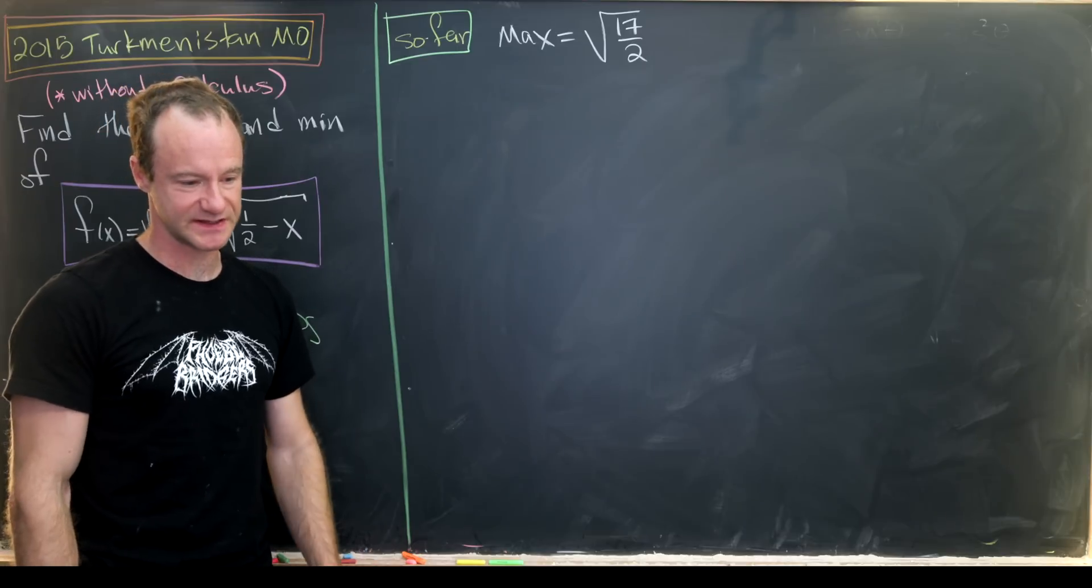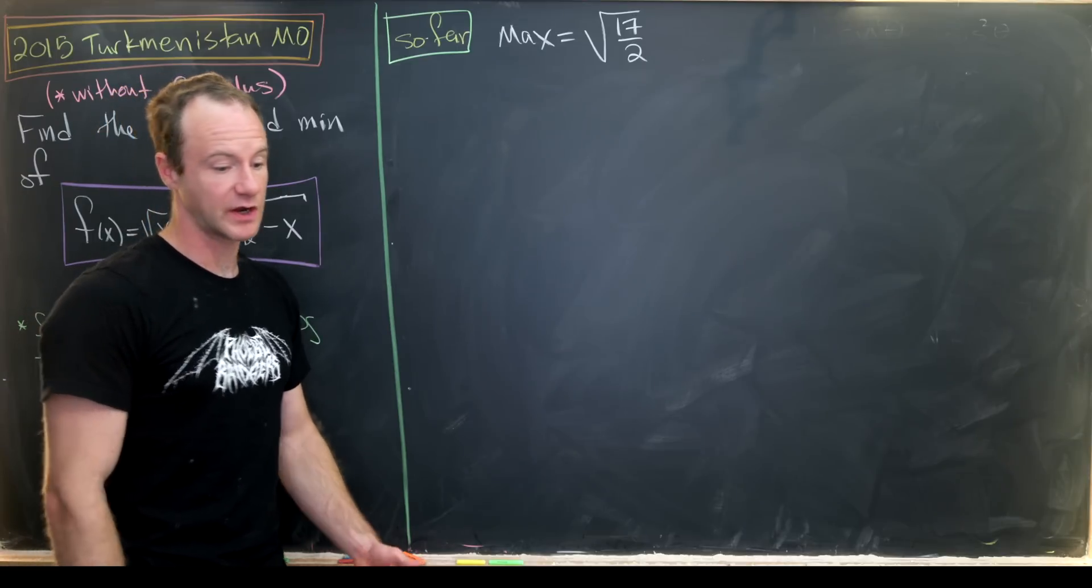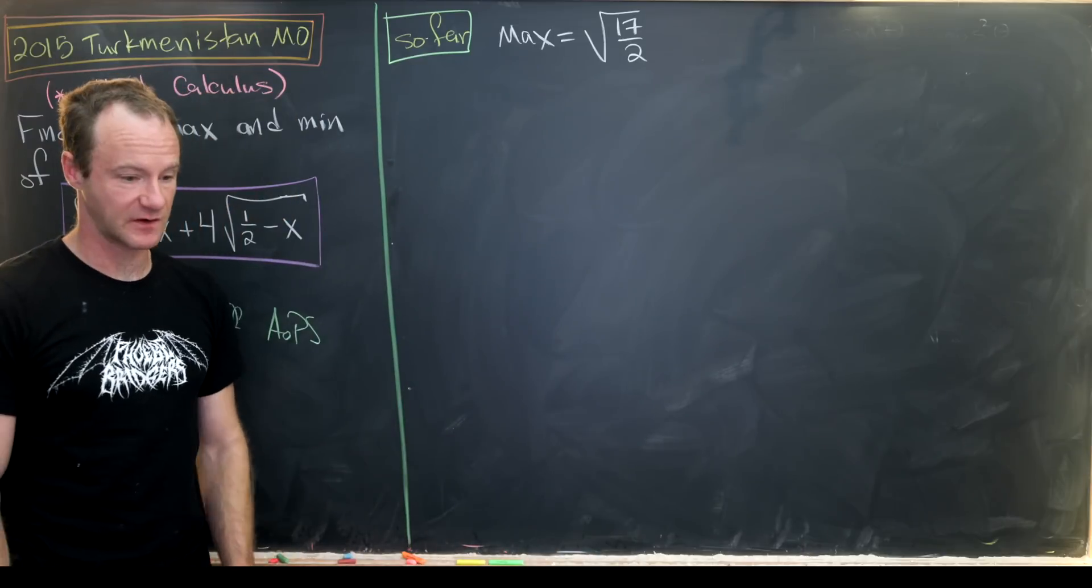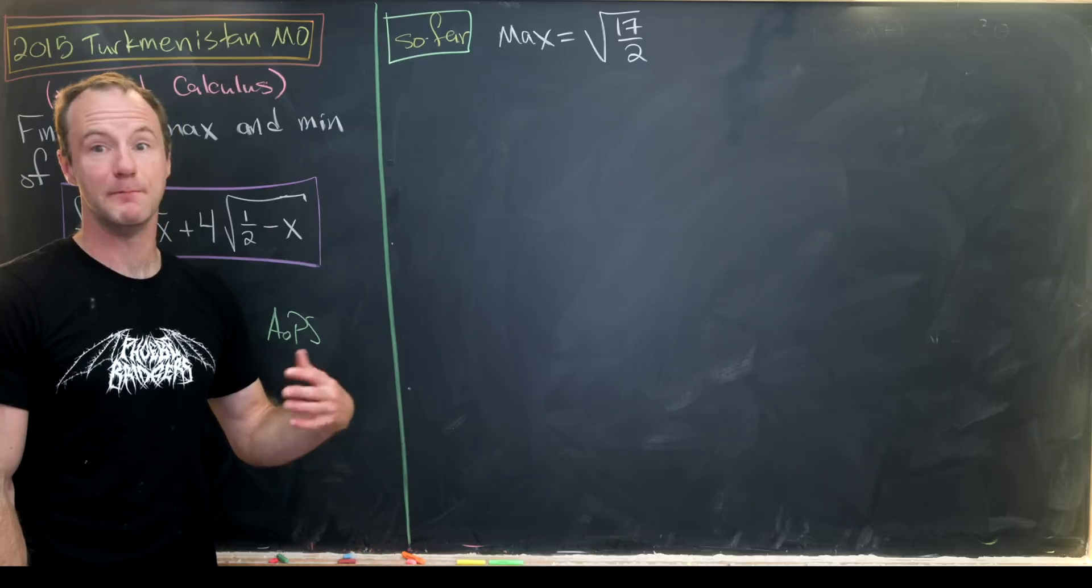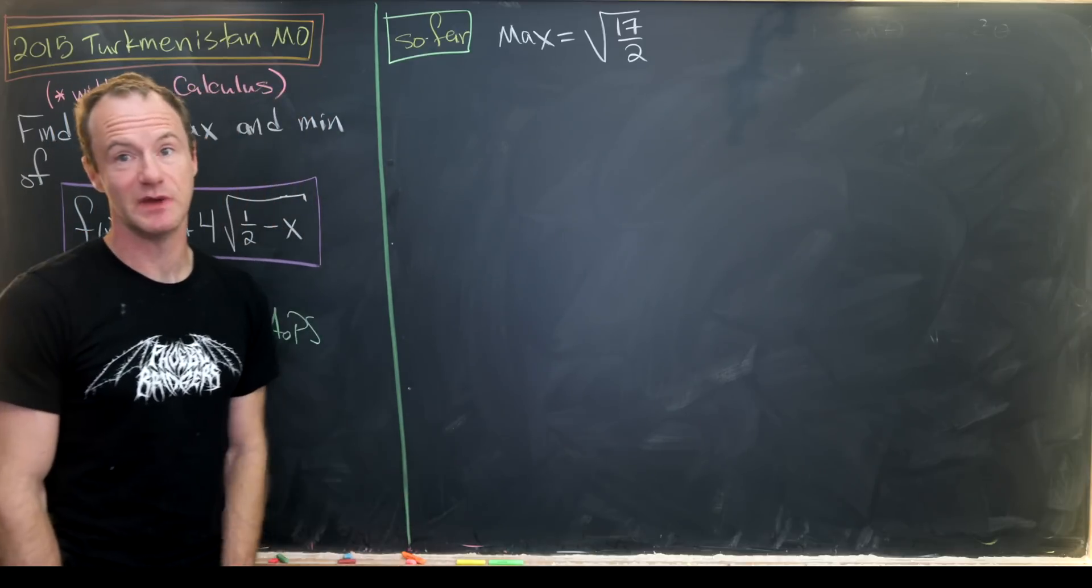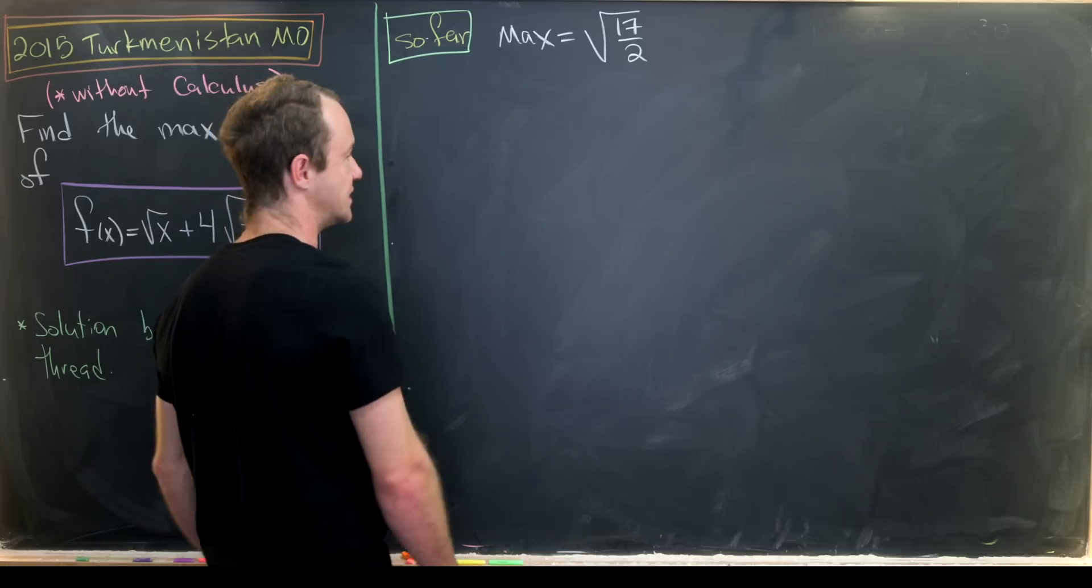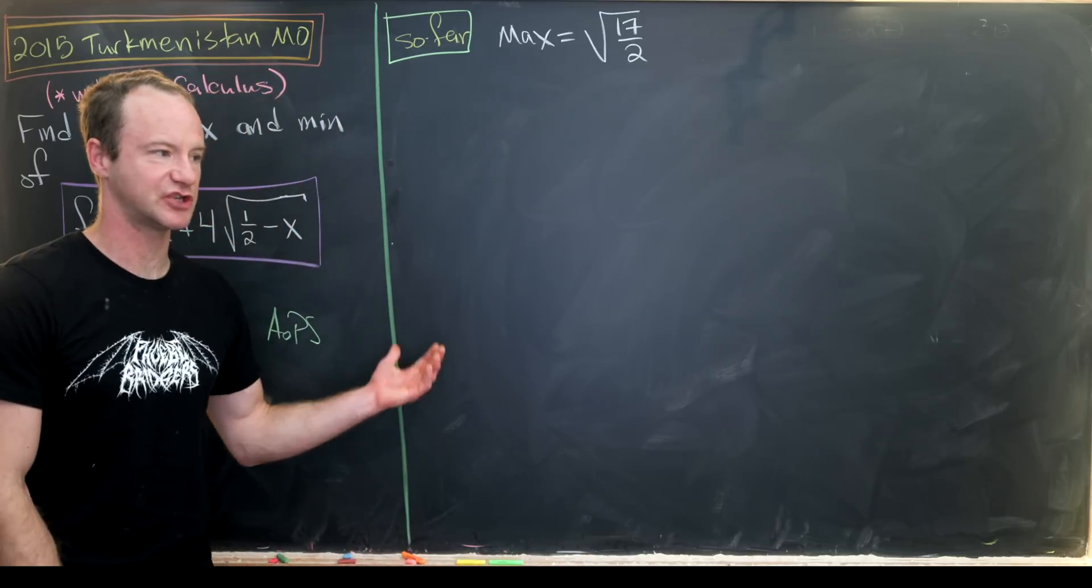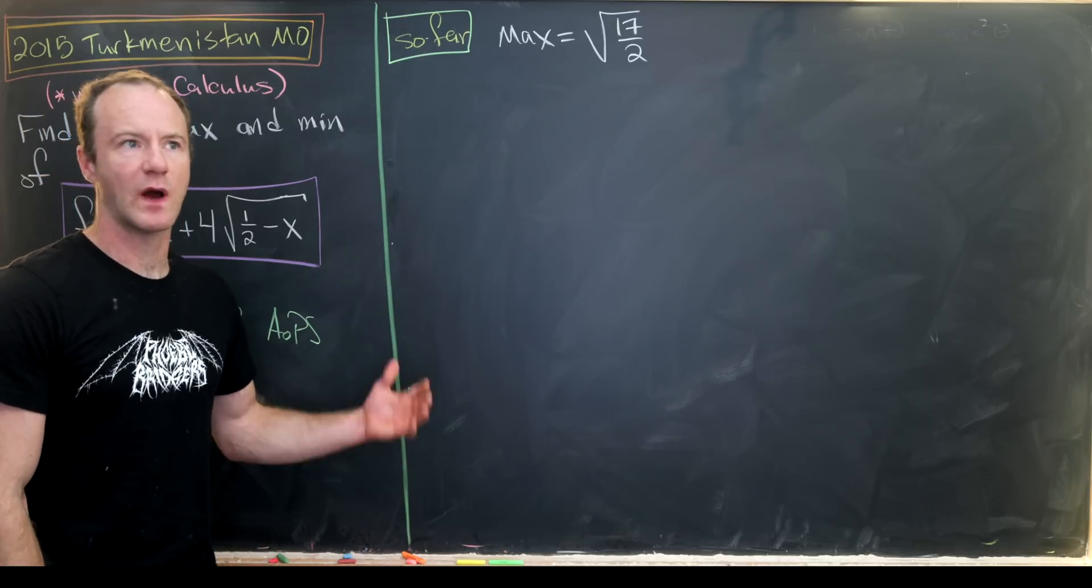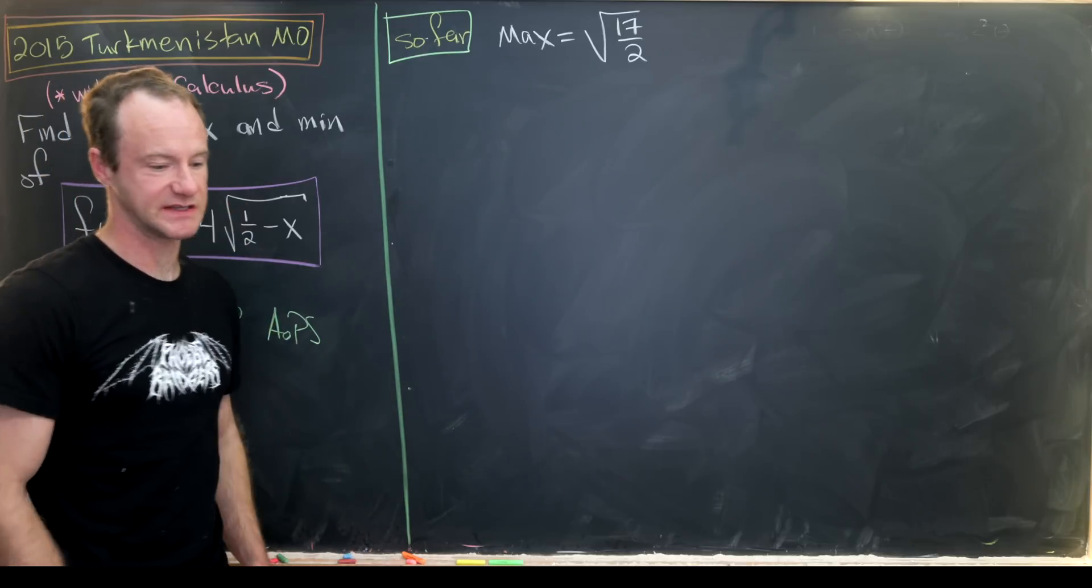So now let's calculate the minimum. And like I said, we're going to do this a slightly different way. We're going to do this by squaring our function f of x. And after squaring our function f of x, we'll look for a minimum value of the square of that function and use that to get a minimum value for our function, using the fact that the square function and the square root function are both increasing. Well, they're increasing when the inputs are positive, at least.